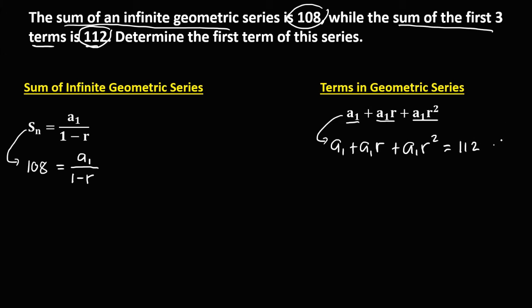From this equation, we can factor out a sub 1. So we put a sub 1 outside: a sub 1 divided by a sub 1 is 1, then plus r, then plus r squared, equals 112. So we have a sub 1 times (1 + r + r²) = 112.